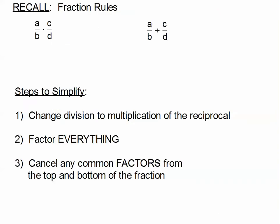Let's flip over to this page of our notes and recall some fraction rules. What do we do when we multiply two fractions? Multiplying fractions is the easiest operation to deal with. You simply multiply the numerators, multiply the denominators, and you're finished. So A times C over B times D — we just multiply across.